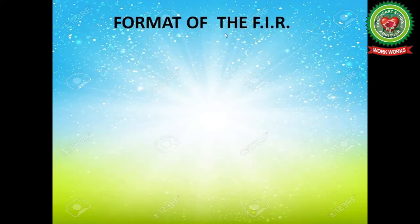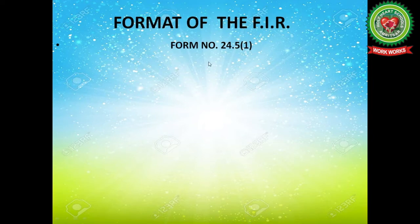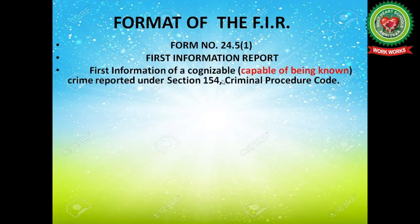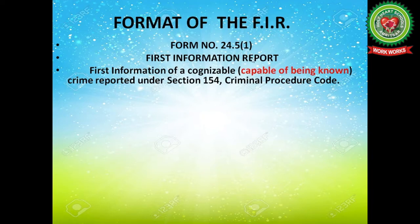Let us discuss the format of the FIR. We will write down Form Number 24.5(1) in the center of the page. In the next line, also in center, you will write down 'FIRST INFORMATION REPORT' — all alphabets have to be capital. In the next line you will write: 'First Information of cognizable crime reported under Section 154 Criminal Procedure Code.' Cognizable means capable of being known.